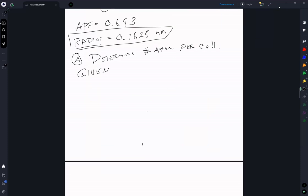We have an atomic packing factor of 0.693, and that is equal to 4 thirds pi r cubed times n, the number of atoms.